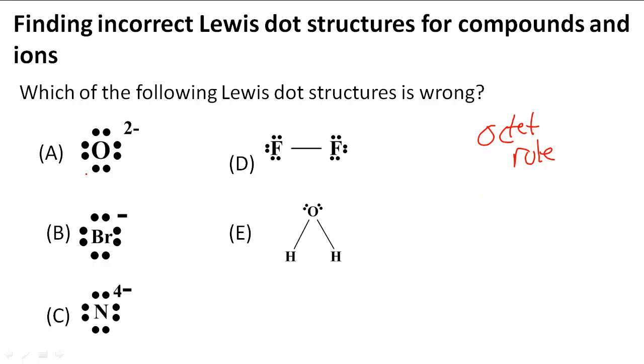For option A, we know that oxygen originally has six valence electrons, so it usually forms an anion of two negative. That's correct. It should have eight valence electrons, and counting shows it has eight. So A is correct. We're not looking for correct ones, we're looking for the ones that are wrong.